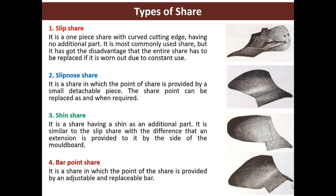Slip shear is the one-piece shear which has a cutting edge with no additional part. It is the most commonly used shear, but it has the disadvantage that the entire shear has to be replaced if it wears out due to constant use. Slip-no shear is the shear in which the point of shear is provided by a small detachable piece. The shear point can be replaced as and when required, as you can see in the figure.